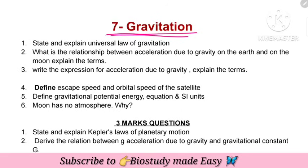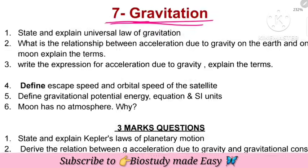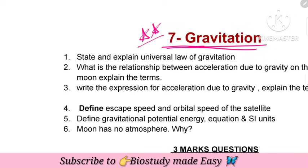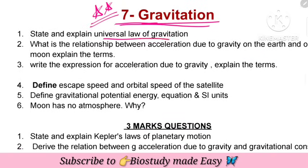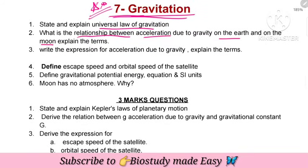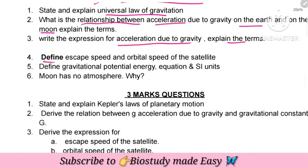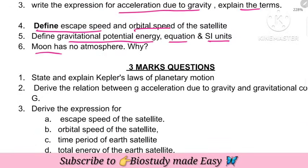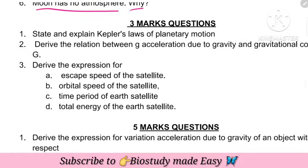Next, gravitation chapter — for most students, the midterm syllabus ends at gravitation. Gravitation is a very important and easily-scoring chapter. One-two mark questions: state and explain the universal law of gravitation, relationship between acceleration due to gravity on earth and on moon, expression for acceleration due to gravity. Define escape speed, orbital speed of satellite, gravitational potential energy, SI unit. Why does the moon have no atmosphere?